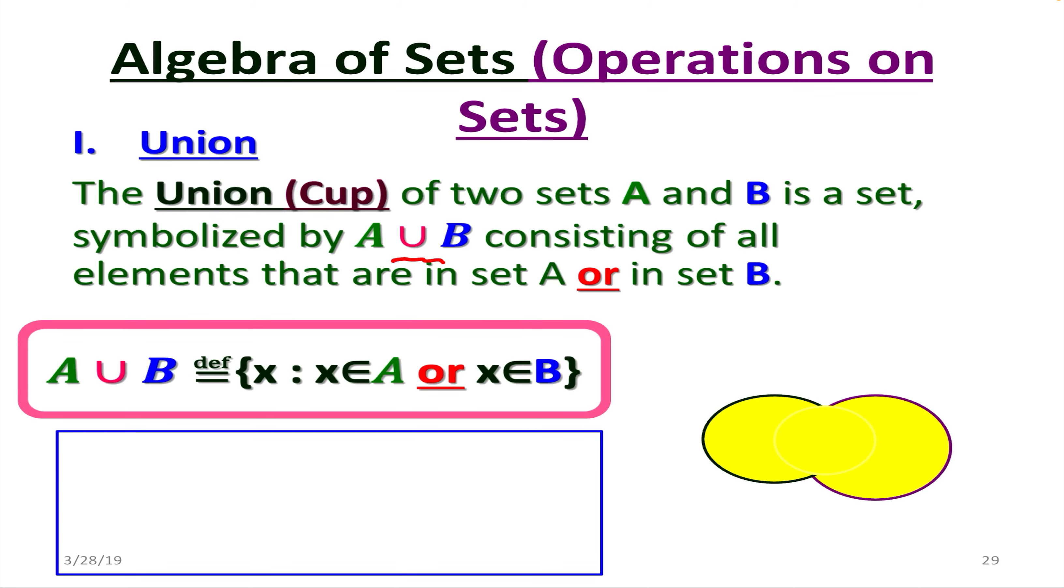consisting of all elements that are in set A or in set B. So by definition, A union B equals all x such that x is in A or x is in B. That's the algebraic definition.